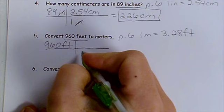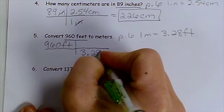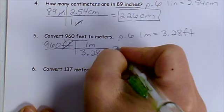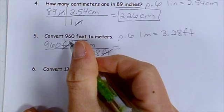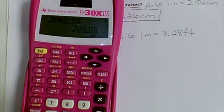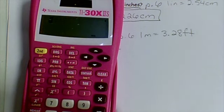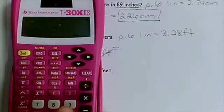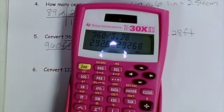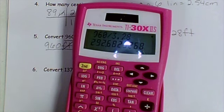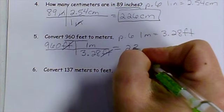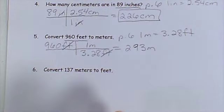So feet goes on the bottom, so we can cross it off. And my one meter goes on the top. So this problem ends up being 960 divided by 3.28. So I use my calculator. 960 divided by 3.28 equals 293. I'm going to round it off. 293 meters.